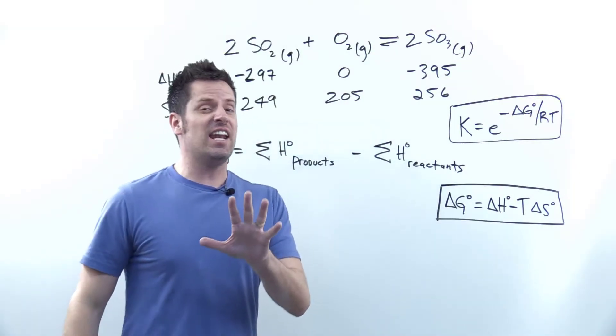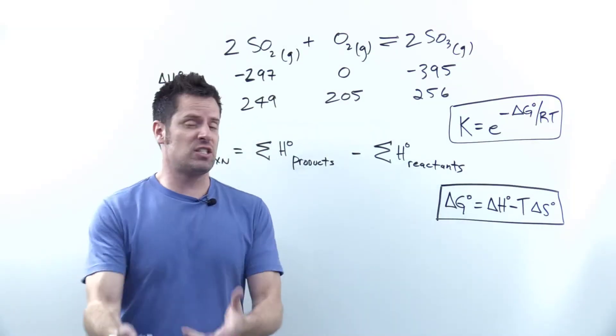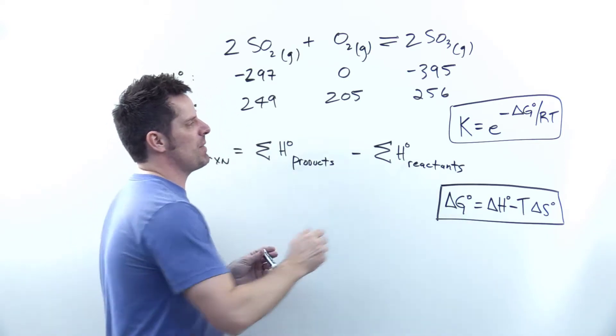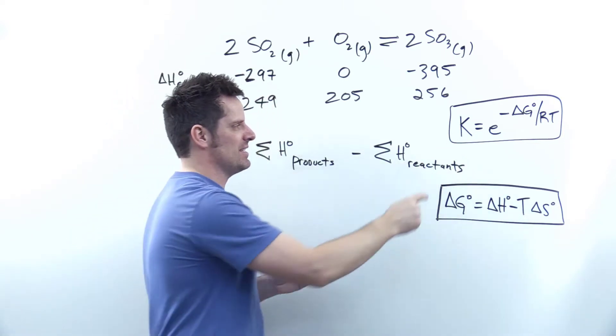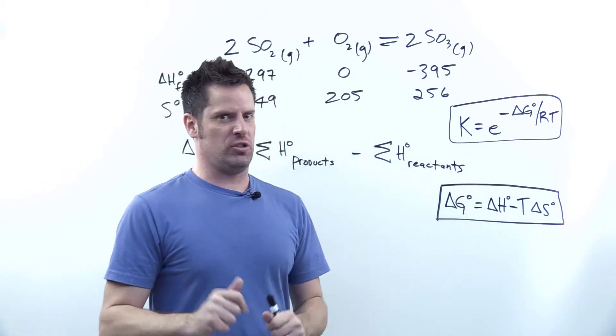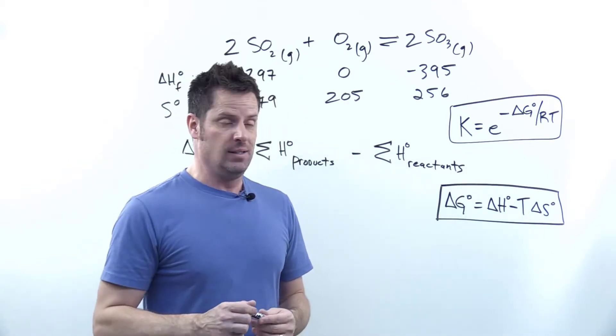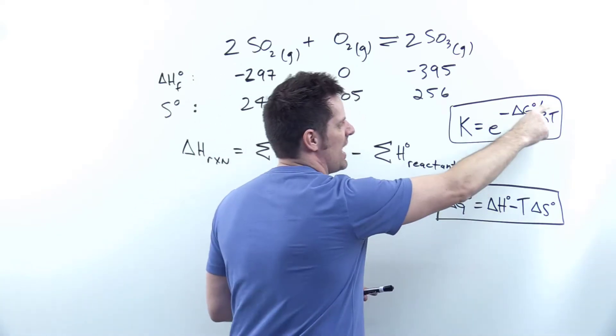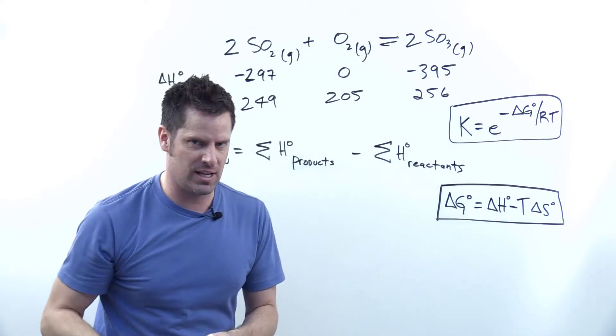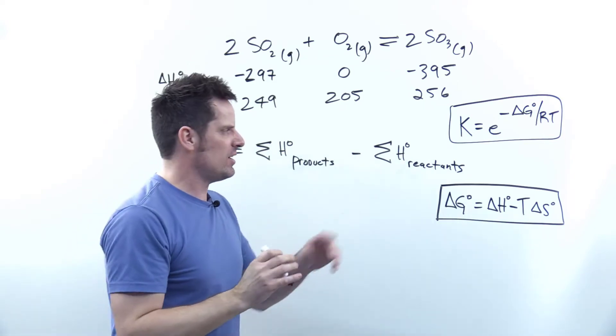This is an involved problem that asks for the equilibrium constant. The equilibrium constant K is determined by using this equation: K equals e (Euler's number) raised to the exponent negative delta G not divided by RT.